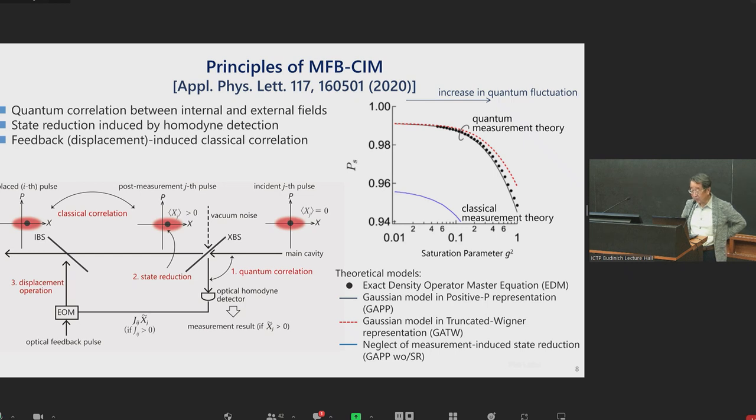In the end, this type of second type of CIM actually converts each time internal-external quantum correlation into internal classical correlation. The right top panel shows the success probability as a function of saturation parameter G squared. This saturation parameter is a key parameter for CIM. It actually decides the classicality and the quantumness of the operation. With increasing G squared toward one, quantum correlation increases and the machine becomes more quantum mechanical. As you can see, the exact density operator master equation model is well described by two types of Gaussian quantum model, based on this quantum measurement theory, but not by the classical measurement theory, neglecting the state reduction induced by homodyne measurement.